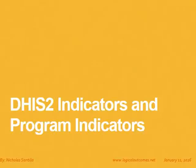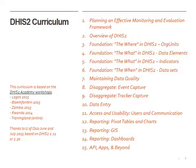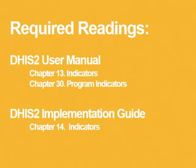Hello, my name is Nicholas Santillo and in this Office Mix video we're going to be looking at the DHIS-2 indicators and program indicators. This is the DHIS-2 curriculum we've been developing here at Logical Outcomes and it's based on the DHIS-2 Academy workshops that you can see listed on the left hand side of your screen. The required readings for this unit are chapters 13 and 30 from the user manual and chapter 14 from the implementation guide.